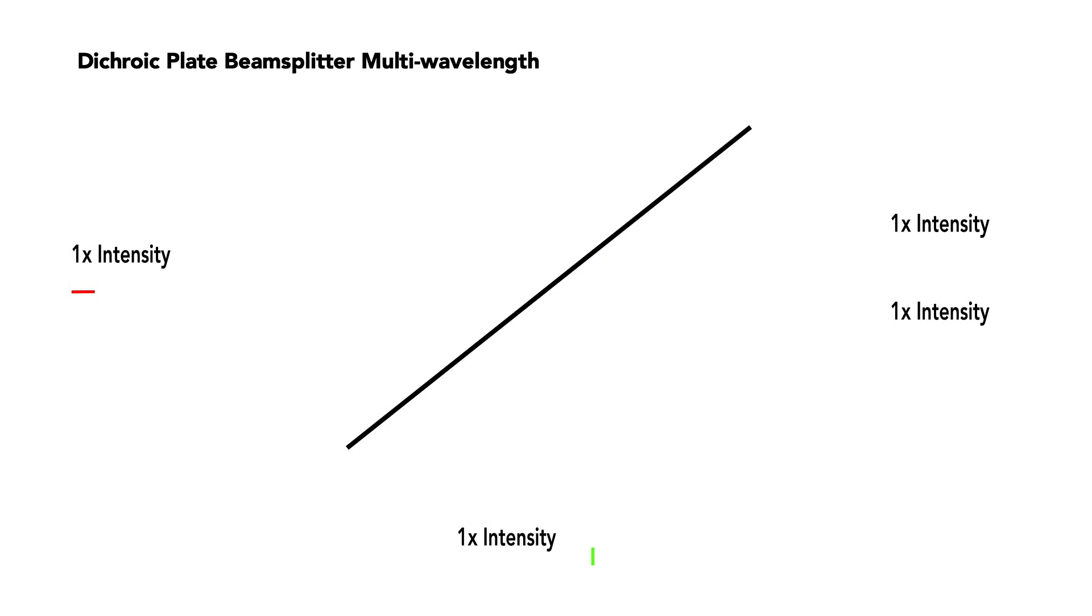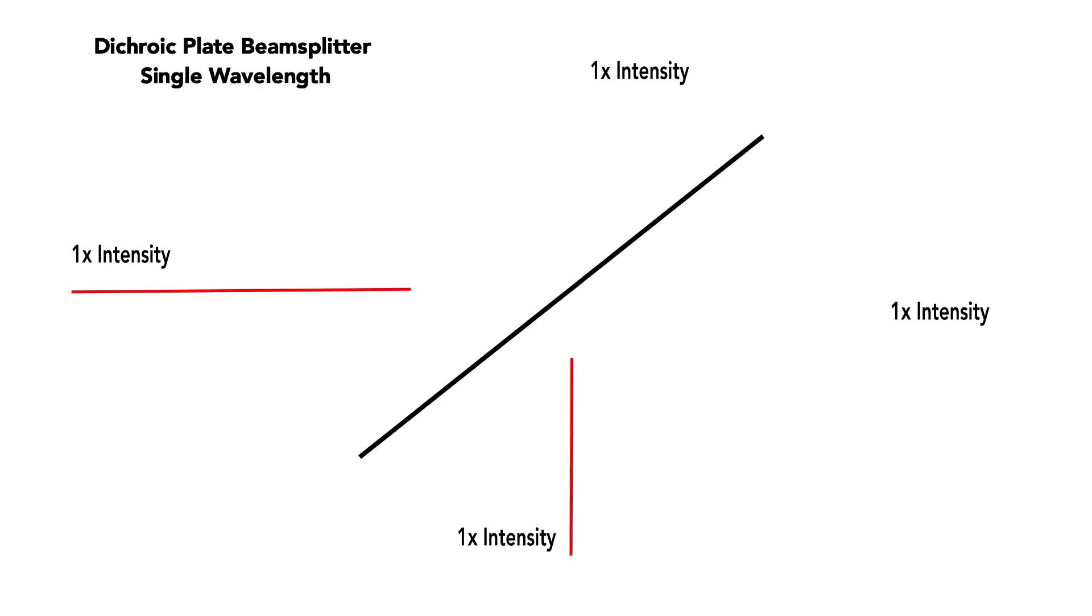Dichroic filters separate the incoming spectrum and transmit one wavelength region while reflecting another. Using this optic in reverse works well when combining beams of different wavelengths, but does not work when the lasers have the same wavelength.